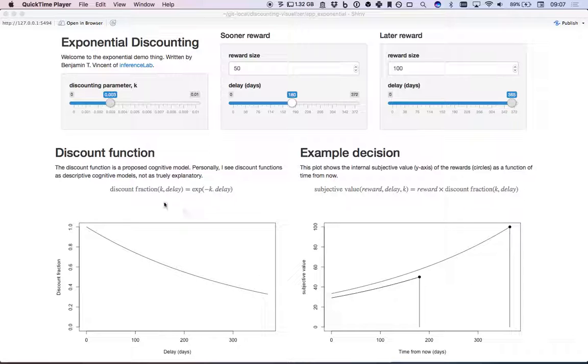So just to recap, the discount function describes the proposed way that the subjective value of a reward decreases with the time delay.